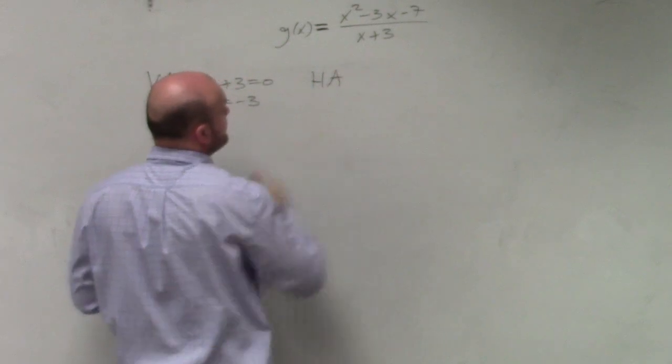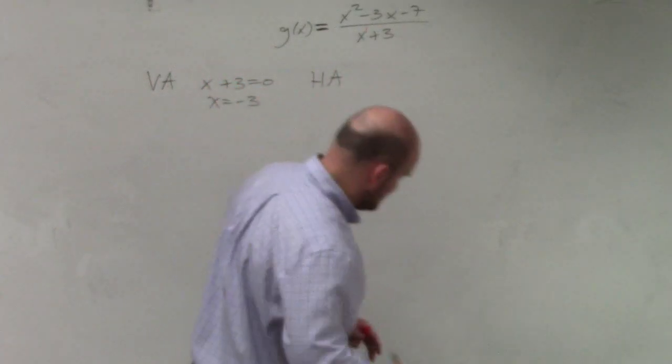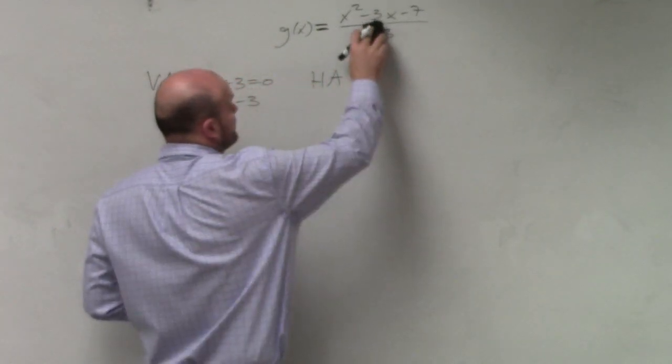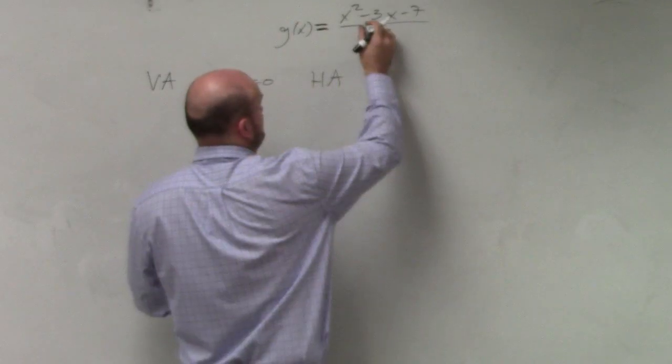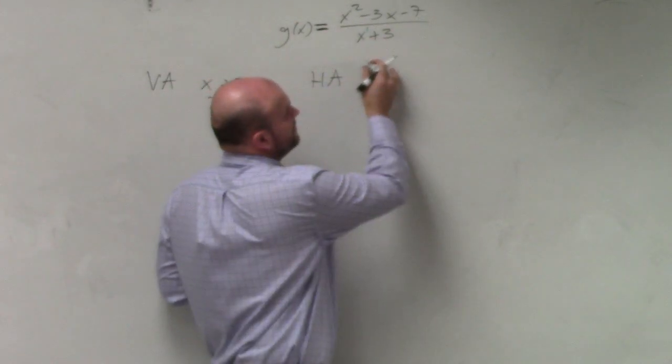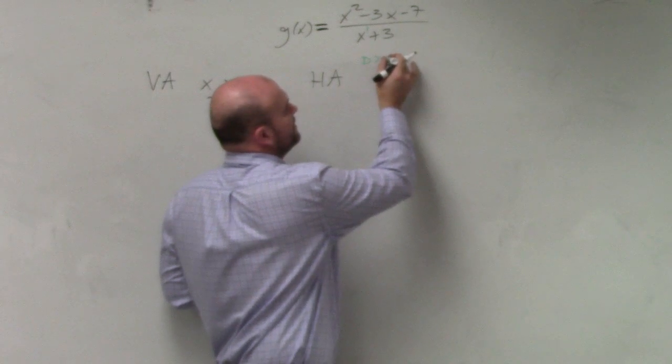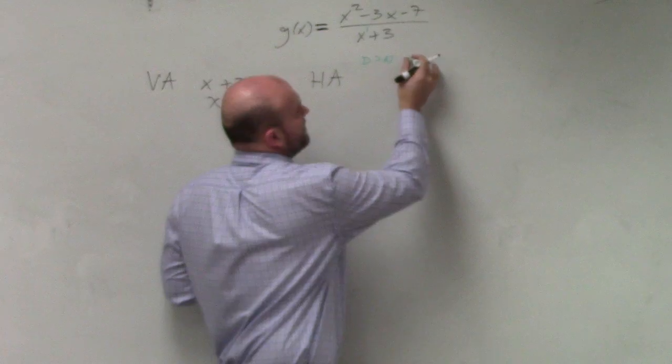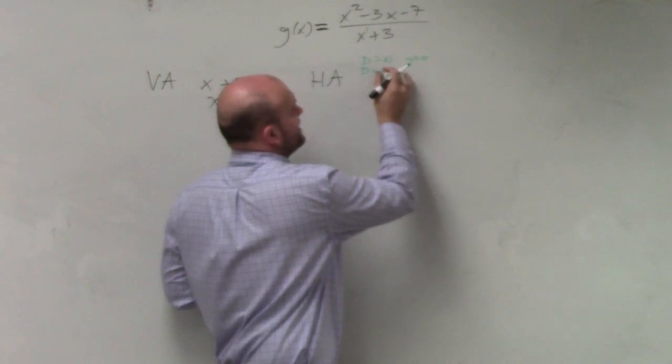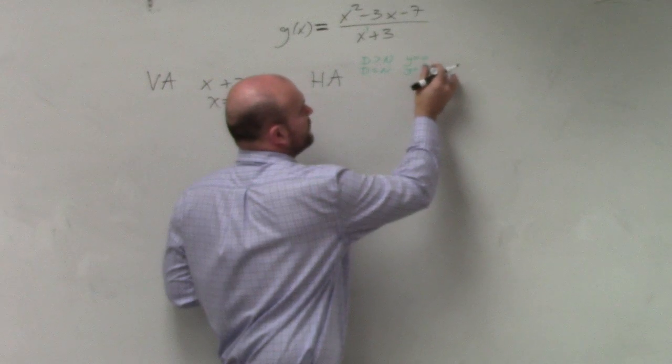Horizontal asymptote. Again, you're comparing the degrees. Actually, I like doing green with these. So guys, we already did this. We did when the degree is greater than the degree in the numerator, then y equals 0. When the degree is equal to the denominator, y equals a over b, which is leading coefficient over leading coefficient.